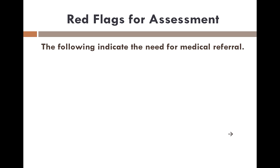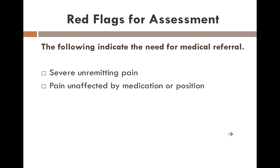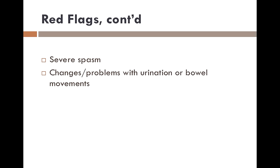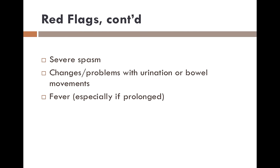If your patient presents with any of the following, you will need to refer out immediately for medical help: severe unremitting pain, pain which is unaffected by medication or position, severe night pain, severe pain with no history of injury, severe spasm, changes or problems with urination or bowel movements, fever especially if prolonged, or psychological problems. Any of these conditions require immediate referral out to a doctor.